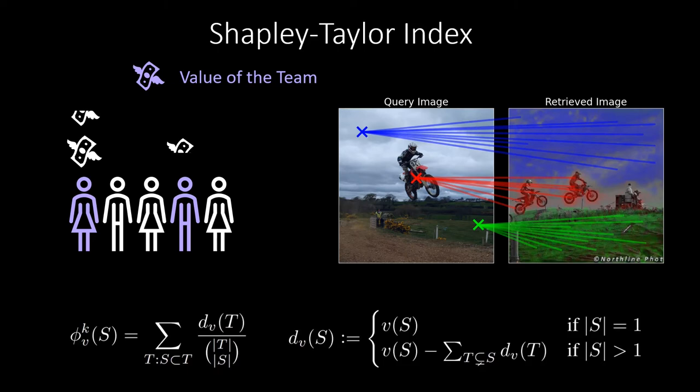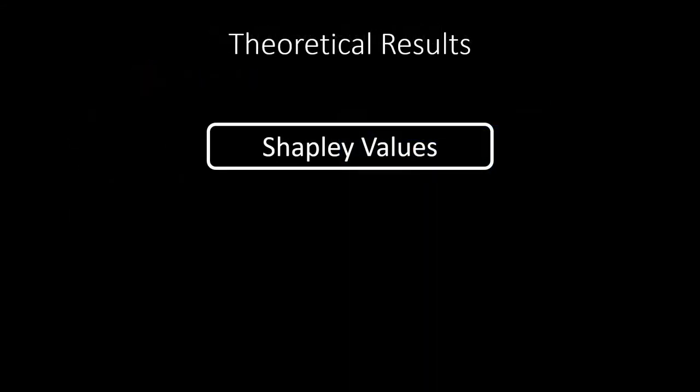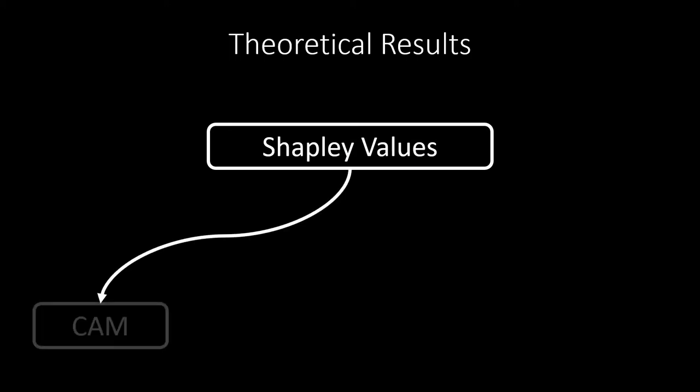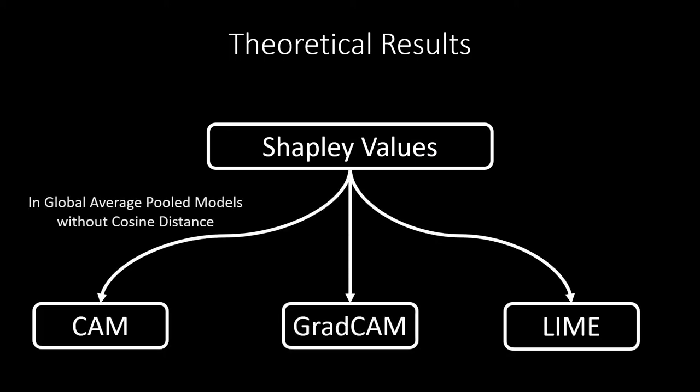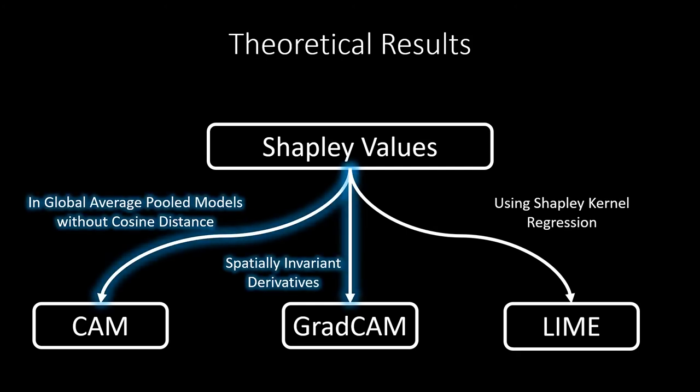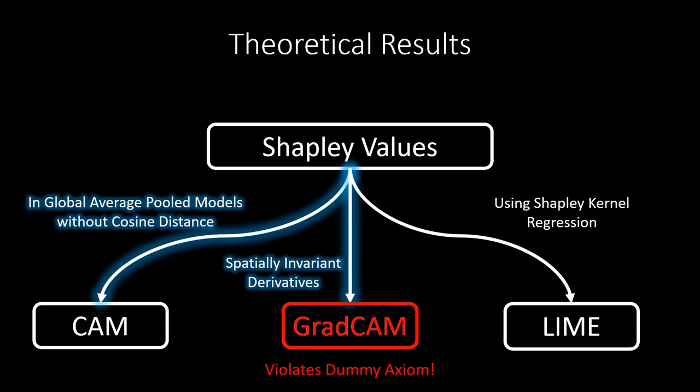Analyzing search engine interpretability through the lens of fair credit assignment gives us deeper insight into popular methods such as CAM, GRAD-CAM, and LINE. Our analysis allows us to determine exactly when these approaches align with the theoretically optimal Shapley value, and to our knowledge some of these connections are new to the literature. This also allows us to find issues with existing methods such as GRAD-CAM, where this method violates key axioms of fair credit assignment.